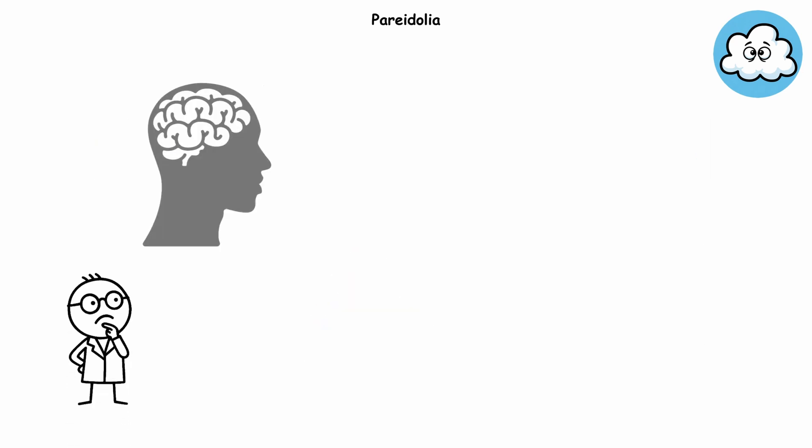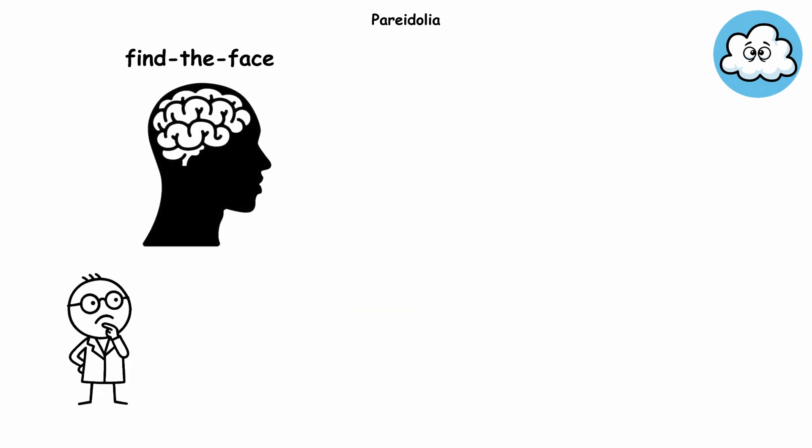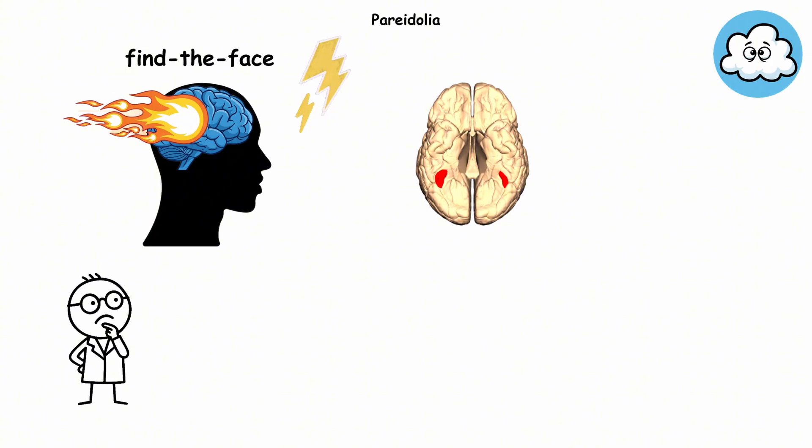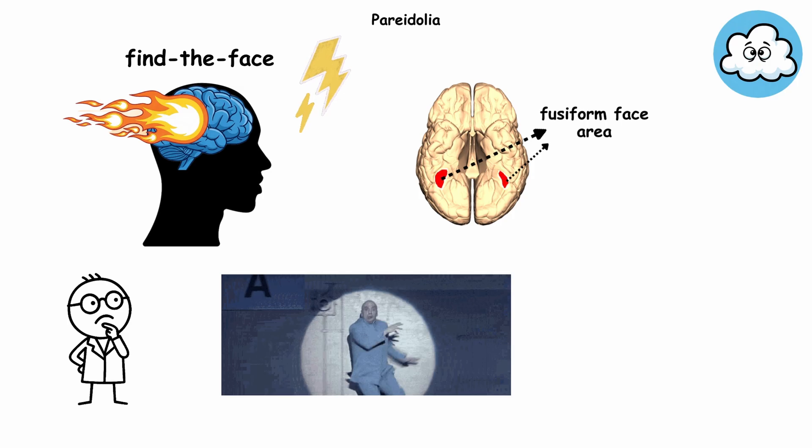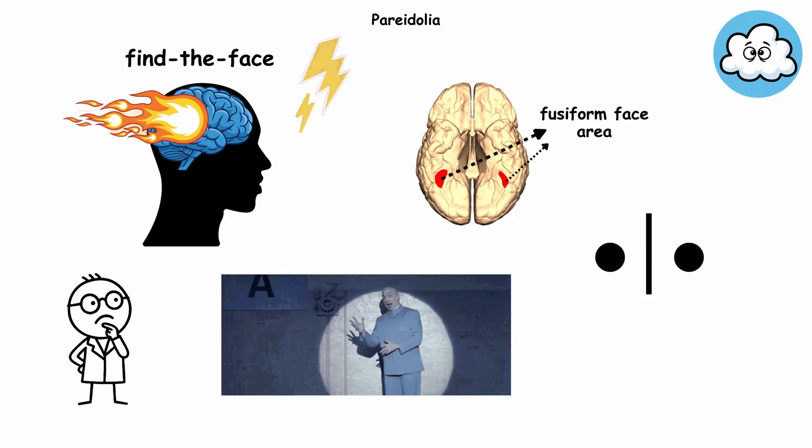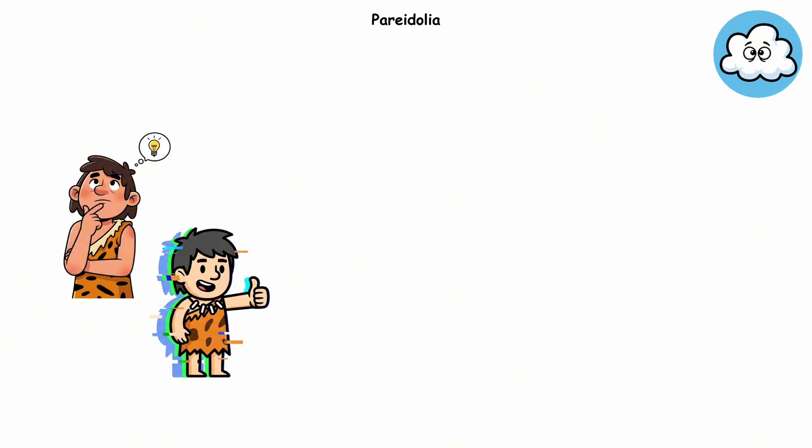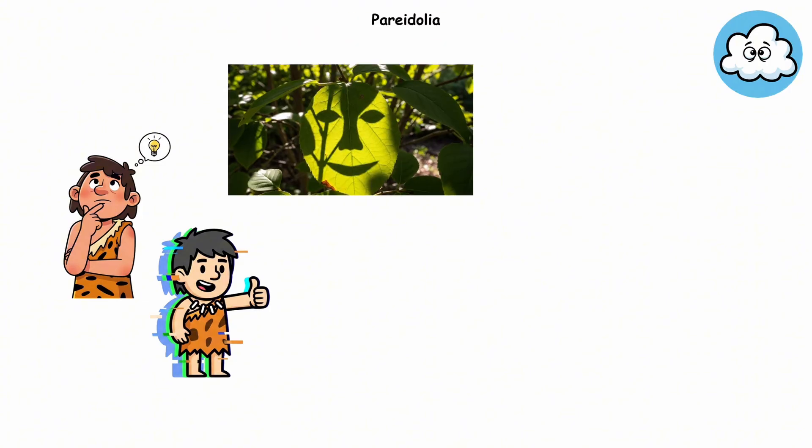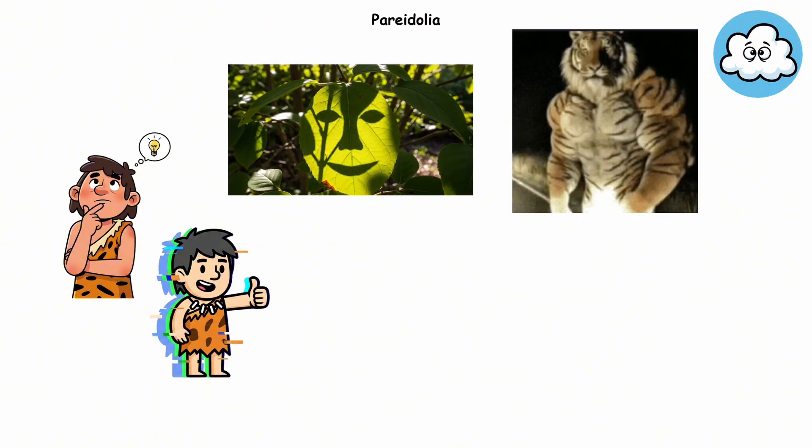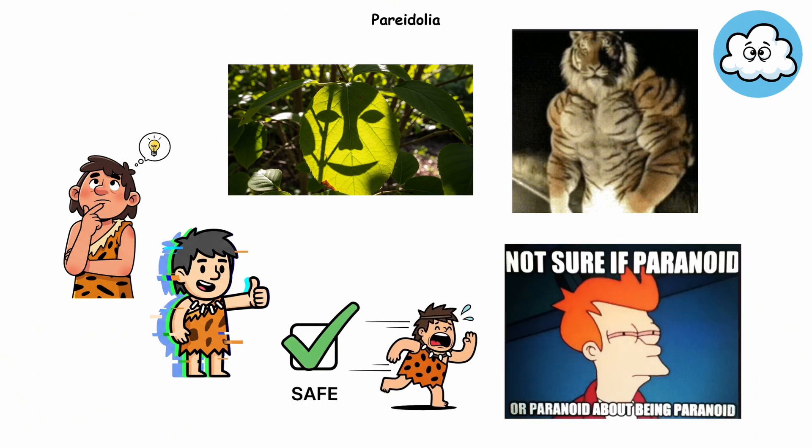Why? Because humans are built with a find-the-face speed boost. Deep inside your brain, there's a zone called the fusiform face area. It lights up like a motion sensor the second it sees two dots and a line vaguely in the shape of a face. This glitch used to keep us alive. Seeing a face in the bushes, even if it was just leaves, was safer than missing an actual predator. Basically, your ancestors survived because they were paranoid about life.